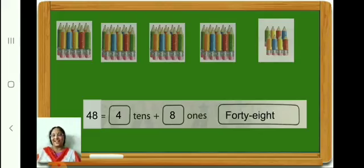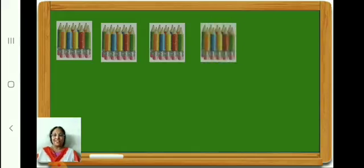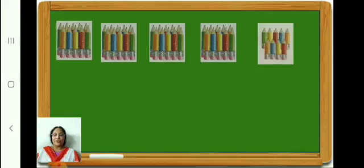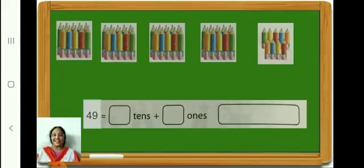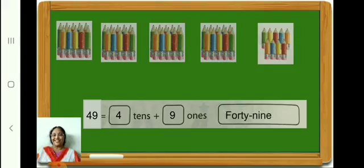Let us go on to the next. In the first box, 10 pencils. Second box, again 10 pencils. Third box, 10 pencils. Fourth box, 10 pencils. Count and see how many pencils in the fifth box — here we have 9 pencils. Count and see in all — 49. 49 is equal to 4 tens plus 9 ones. Write it down. Finish writing? Very good. Write number name 49. Finished? Very good.